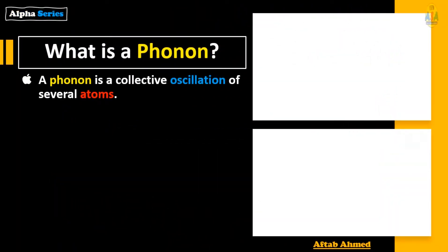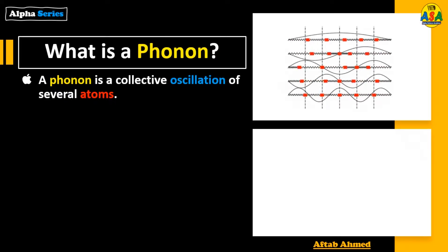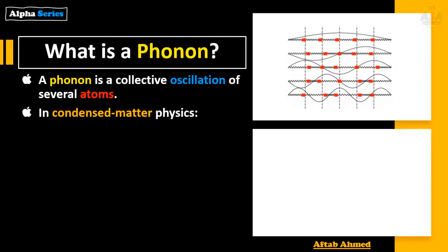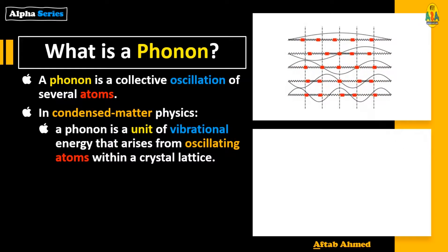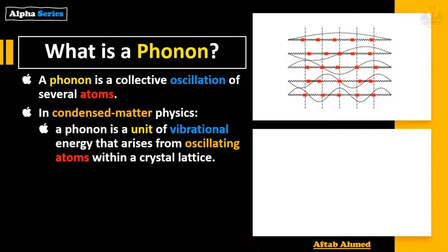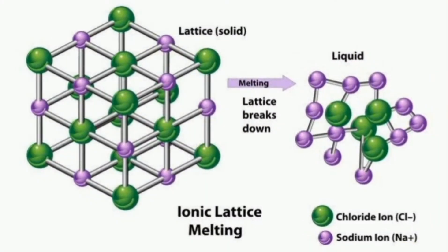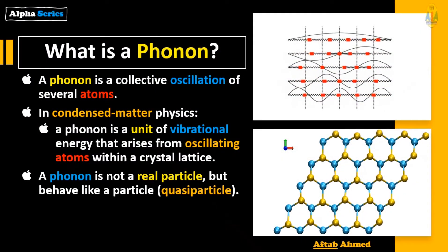A phonon is a collective oscillation of several atoms. When a number of atoms collectively oscillate, they produce a phonon. In condensed matter physics, a phonon is a unit of vibrational energy that arises from oscillating atoms within a crystal lattice. A crystal lattice is a periodic three-dimensional regular arrangement of atoms.